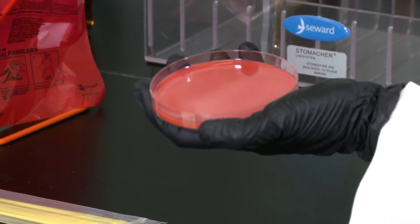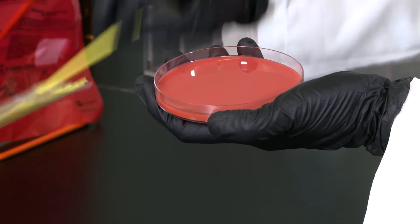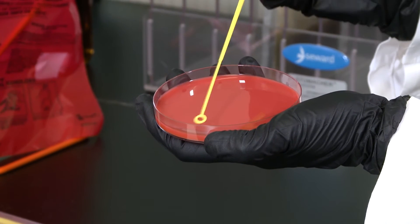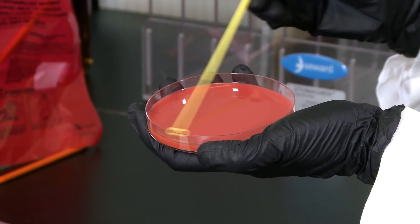Using a sterile loop streak across half of the agar surface going backwards and forwards twice. The goal is to spread the liquid as completely as possible across half of the agar.